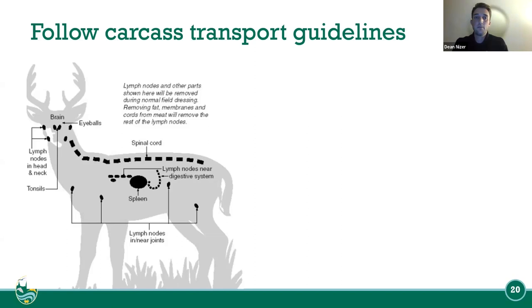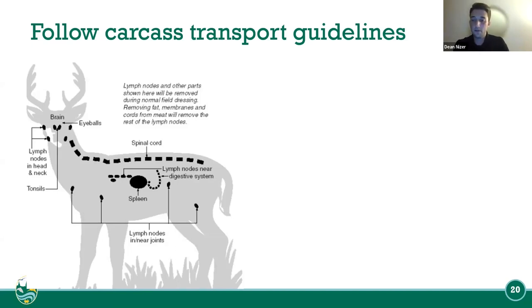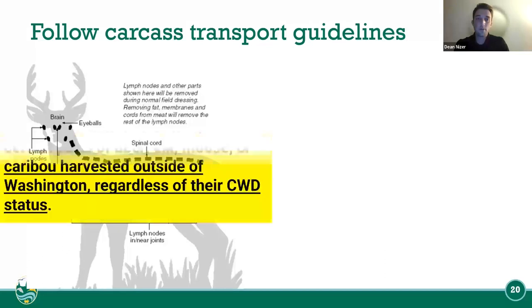The majority of the time we take just the two lymph nodes out of the neck, because that's the easiest to retain from the deer. We also take the front two incisors — the front two teeth — to age the deer.